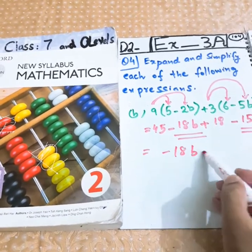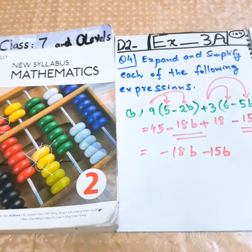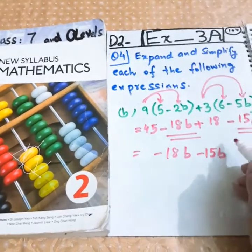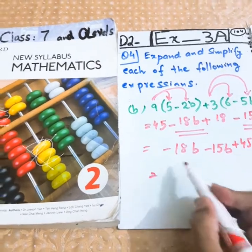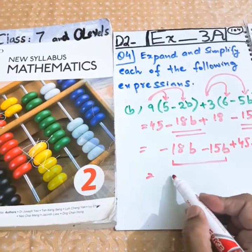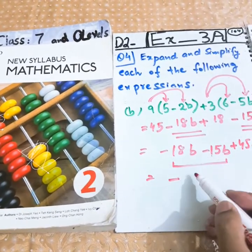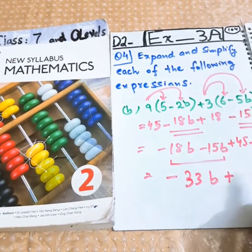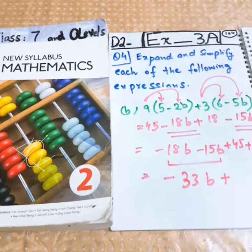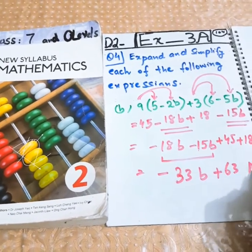Minus 18b minus 15b, plus 45 plus 18. Bigger value is 18, its sign is negative. Minus minus is plus. 18 and 15 will be 33b. And bigger value is 45, its sign is positive. 45 and 18 is 63. This is the answer: -33b+63.